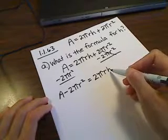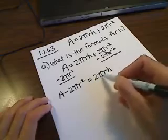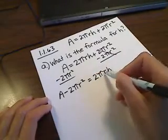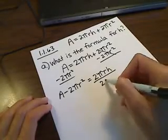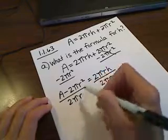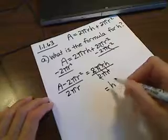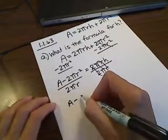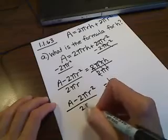Now if I'm trying to isolate the h, what I need to do is undo these operations, get all three of these things on the other side. All three of these things are being multiplied to the h, so to undo multiplication, I do division. So I would divide both sides by the 2 pi r.